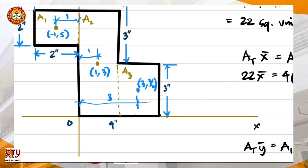The centroid is around 1.1 in x and about 2-point-something in y, so the centroid is located right around here on the figure. That is the location of the centroid.